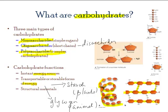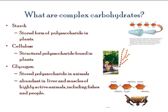Starch is the stored form of polysaccharide in plants, and glycogen is in animals. Another complex carbohydrate is cellulose, which is always found in plants and is not soluble in water. Abundant supplies of starch and glycogen are always stored in the cell and can be used during starvation or when the cell is deprived of energy. You can see in these images — for example, in this insect, the shell has complex carbohydrates that give it that texture, which is called chitin.